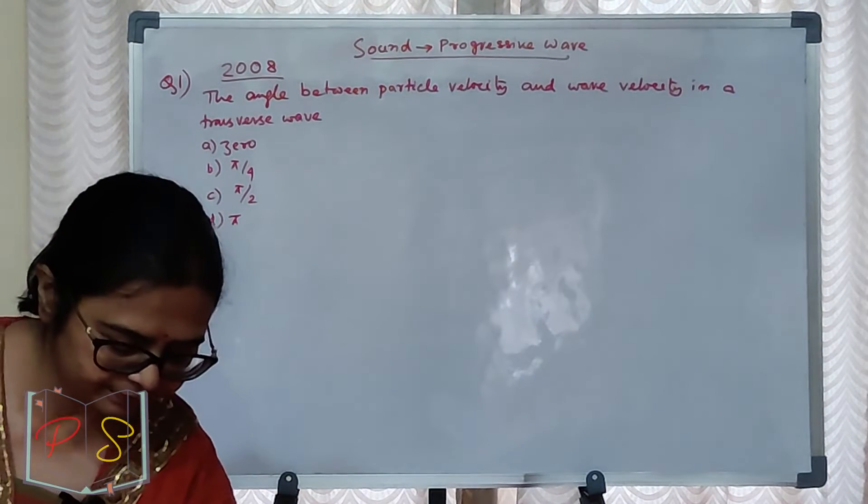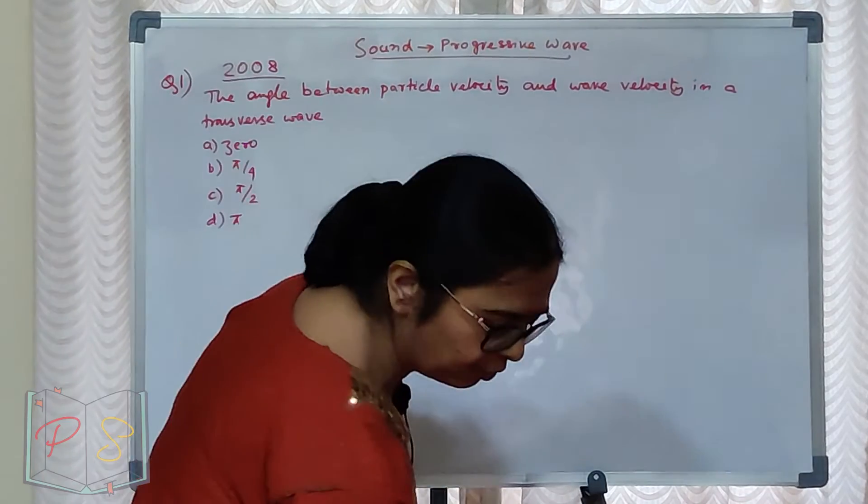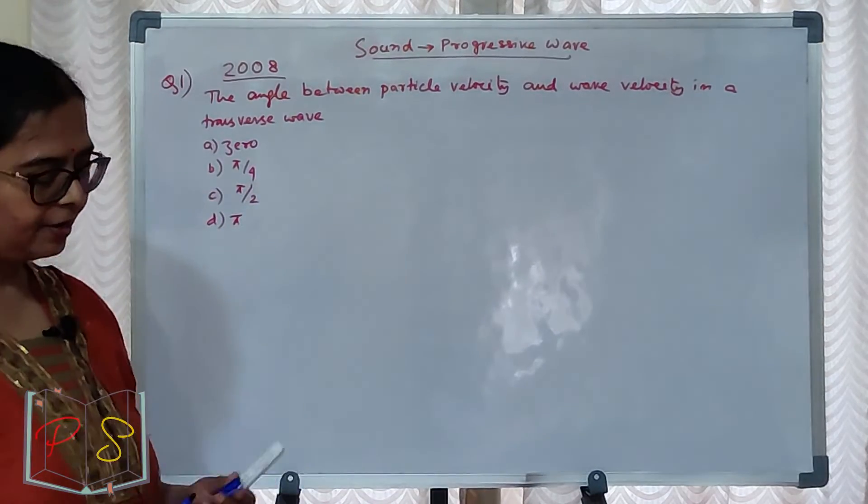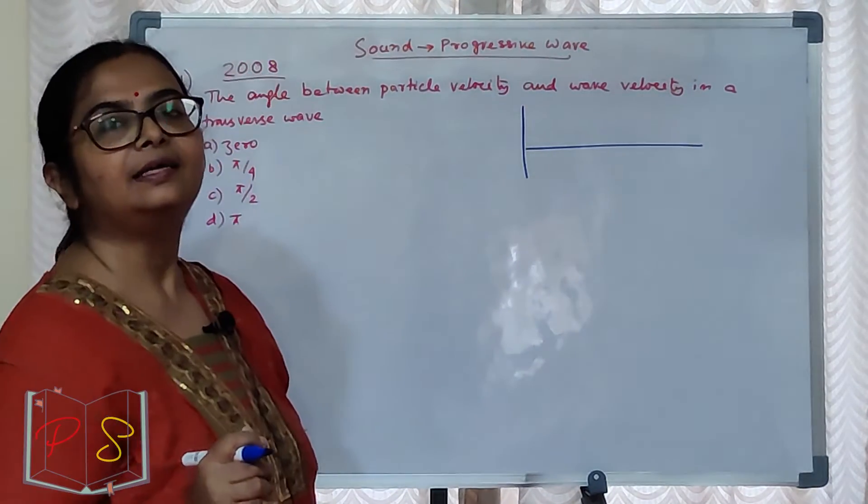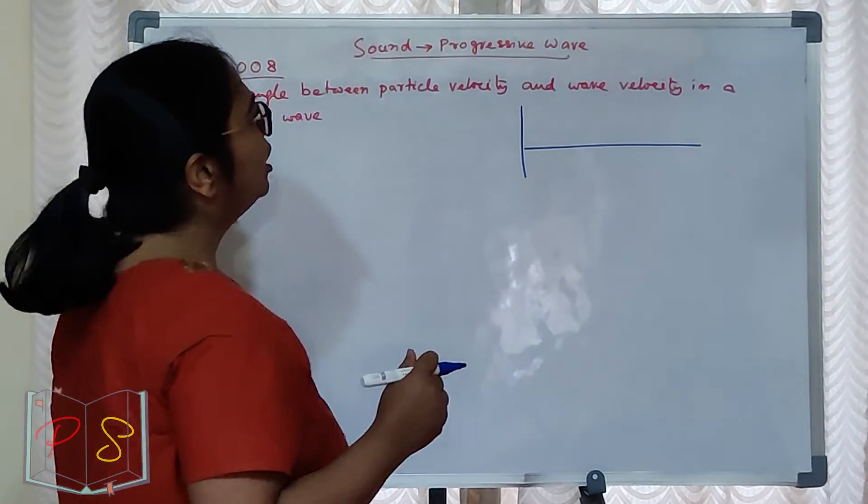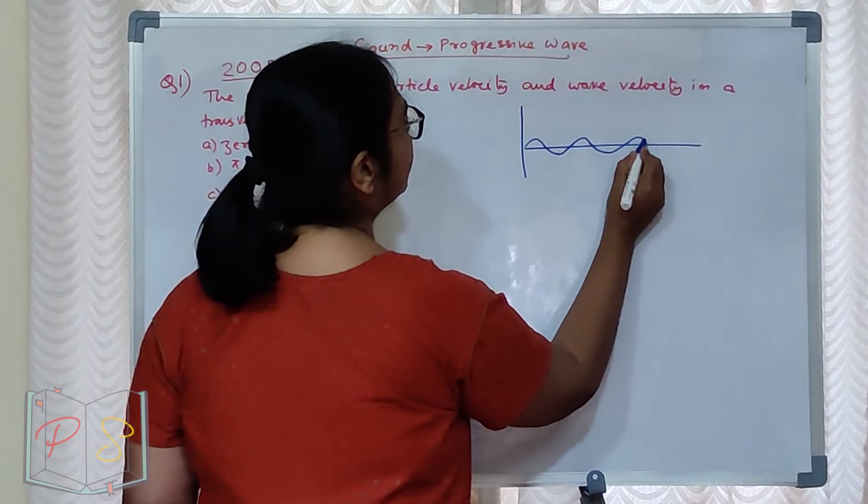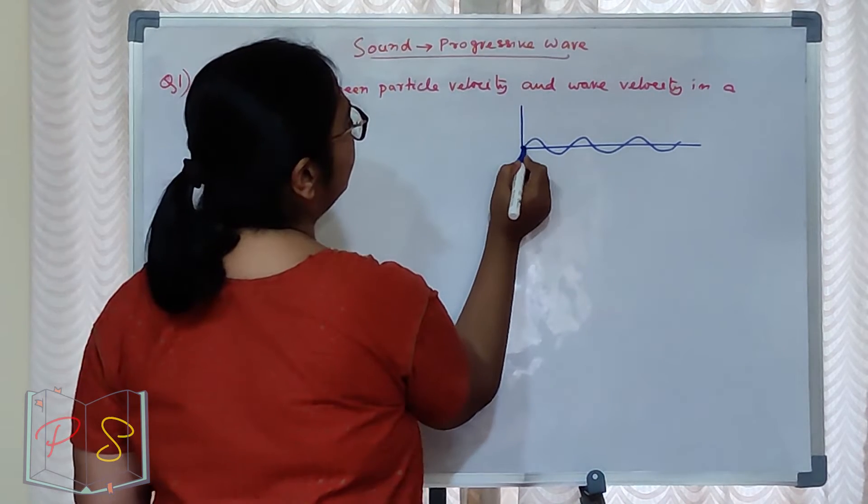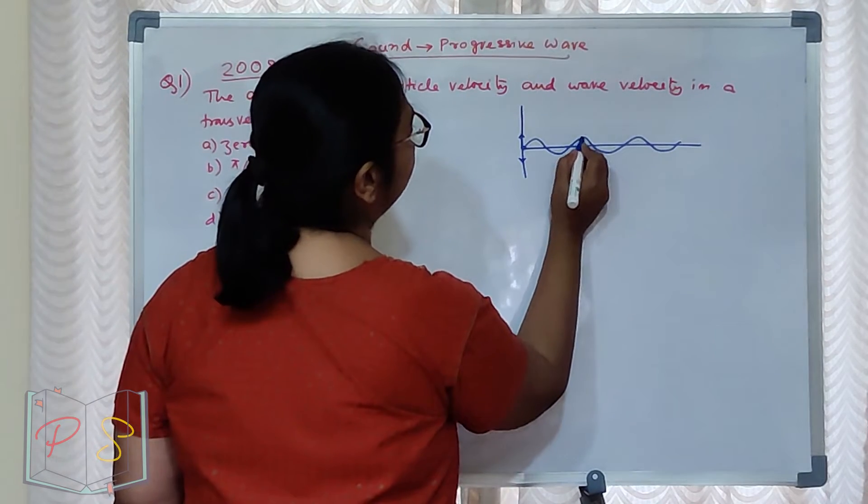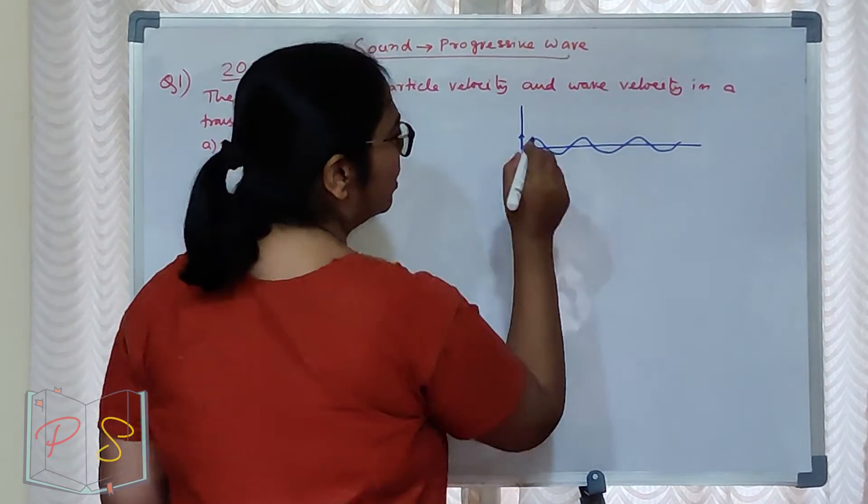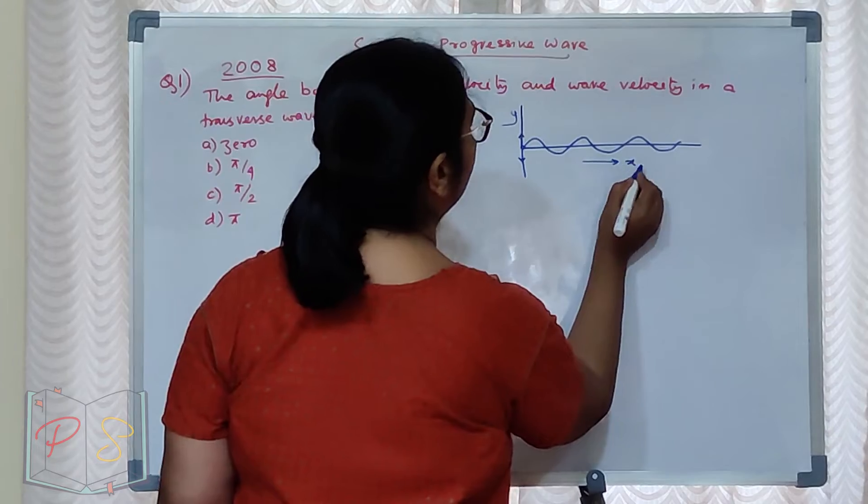What happens? The angle between particle velocity and wave velocity. As we do it, we always discuss a little bit of theory so that we remember. So here we are talking about transverse wave.